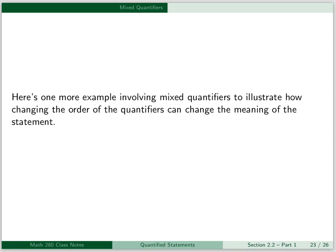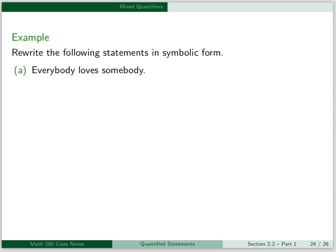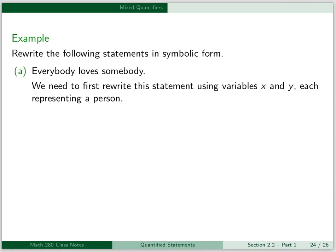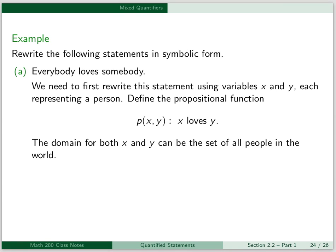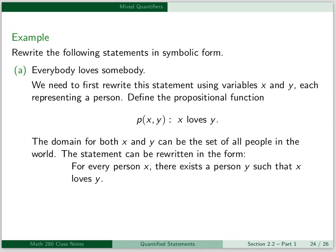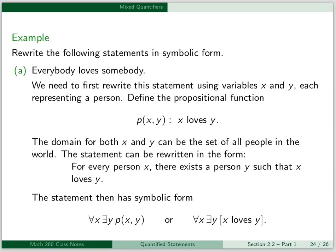Here's one more example involving mixed quantifiers to illustrate how changing the order of the quantifiers can change the meaning of the statement. We again want to rewrite the statement in symbolic form. Our first statement is: everybody loves somebody. To write this in symbolic form, we need to first rewrite this statement using variables x and y, each representing a person. Define the propositional function p of x, y to be x loves y. The domain for both x and y can be the set of all people in the world. The statement can then be rewritten as: for every person x, there exists a person y, such that x loves y. The statement then has symbolic form: for all x, there exists a y, such that p of x, y — or: for all x, there exists a y, such that x loves y.